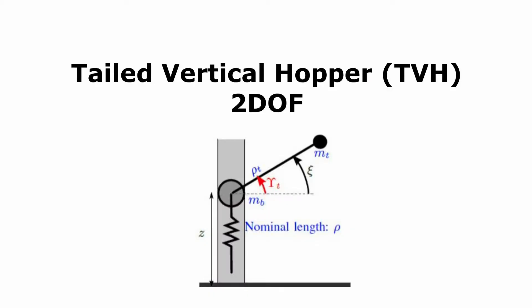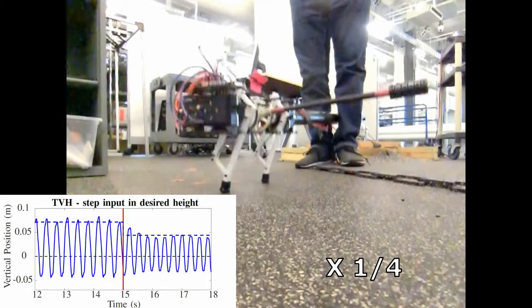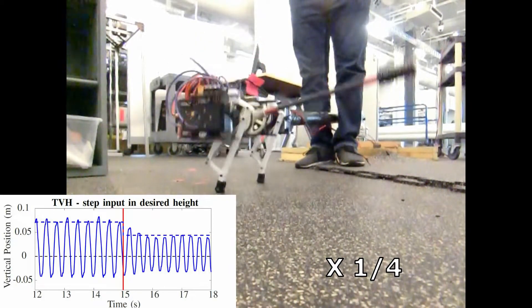In two degrees of freedom, our analytical results allowed us to tune the tail gain for accurate tracking of desired hopping height.